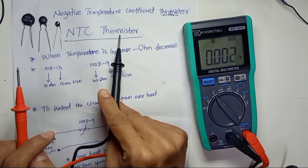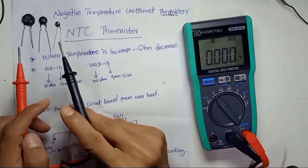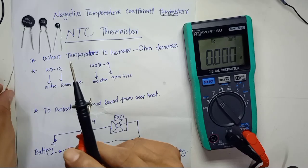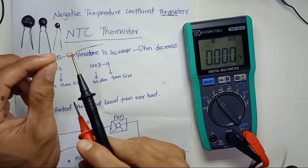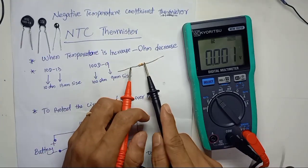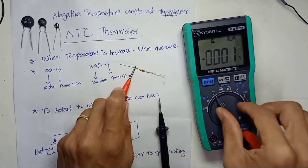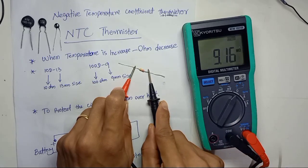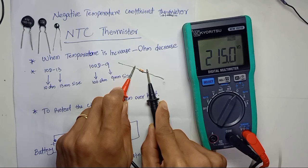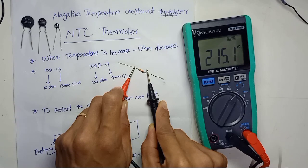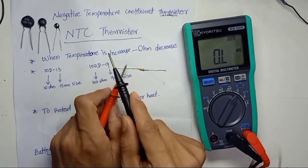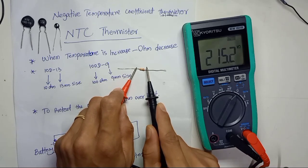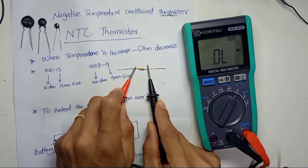A thermistor is just like a resistor. Here I have a resistor which is red-red-yellow, which means 220 kilo-ohm. If you measure the resistor's ohms you get its value. This one reads 215.1 kilo-ohm on the display — within the plus-or-minus 5% tolerance, so the value is correct.